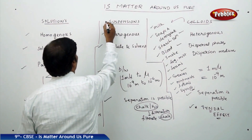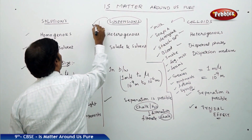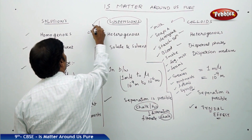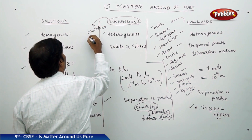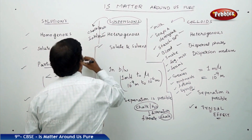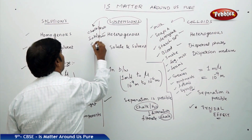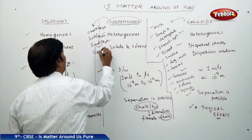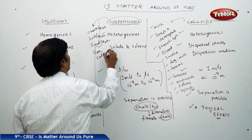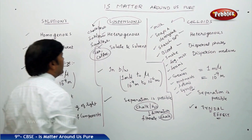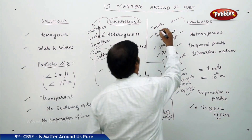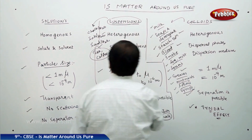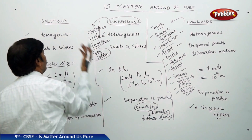For suspensions, the most popular examples are chalk in water, ink in water, and sand in water. Tea and coffee are also suspensions. Solutions are very common and we can easily identify them, so there is no need to highlight them separately.